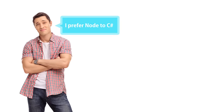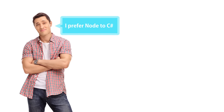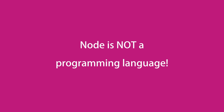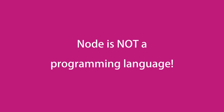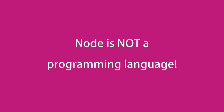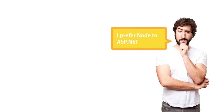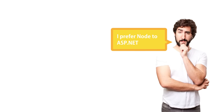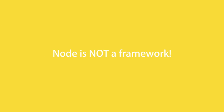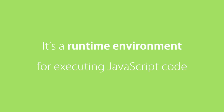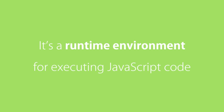Node is not a programming language — comparing Node to C# or Ruby is fundamentally wrong, like comparing a car with an apple. Node should also not be compared with frameworks such as ASP.NET, Rails, or Django. Those are frameworks for building web applications. Node is a runtime environment for executing JavaScript code.